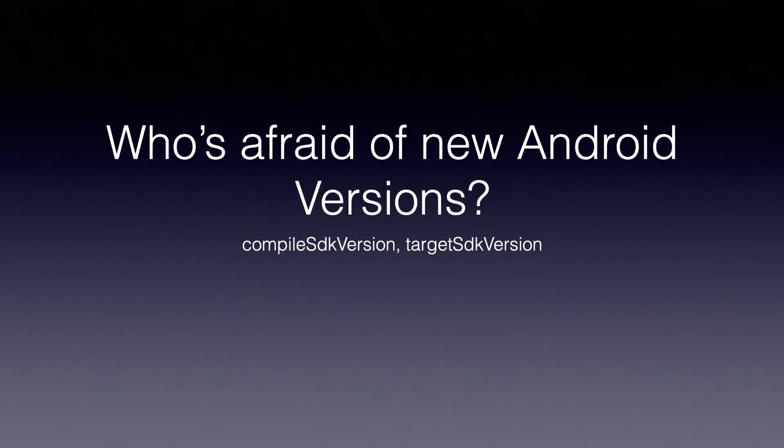Hello world, this is Konstantinos, and this time I'm going to take a guess that every time you have needed to update the target SDK version or the compile SDK version inside the build.gradle file of your Android application, you need to Google their meaning and differences, and even then it still seems confusing.